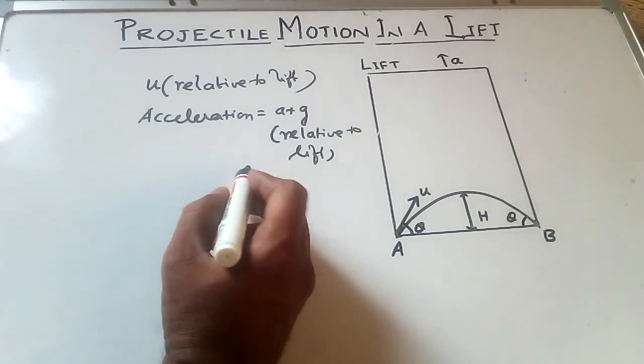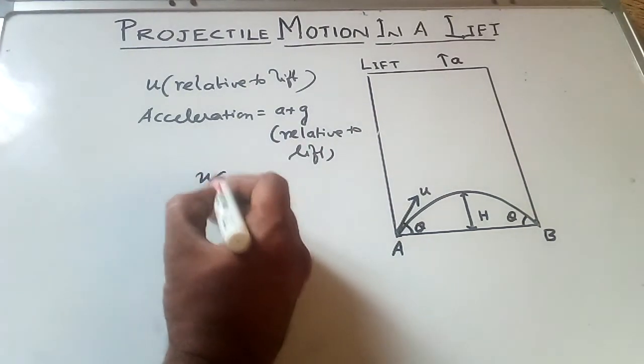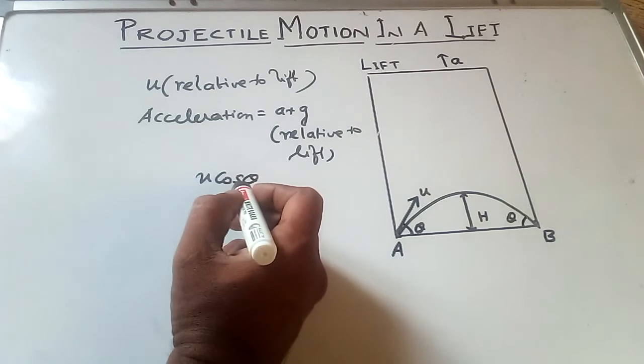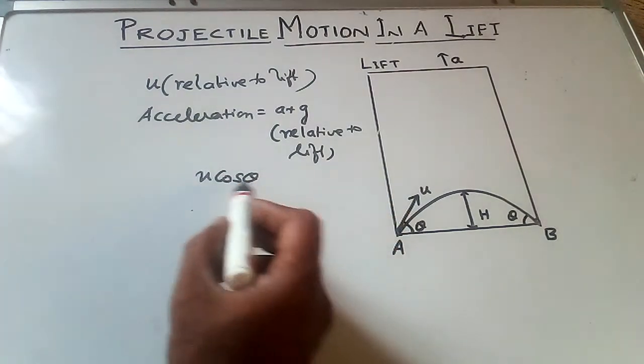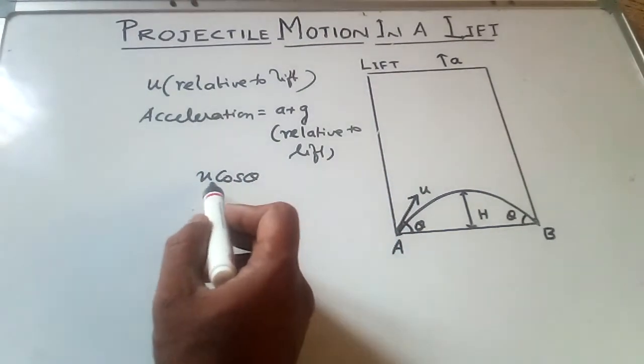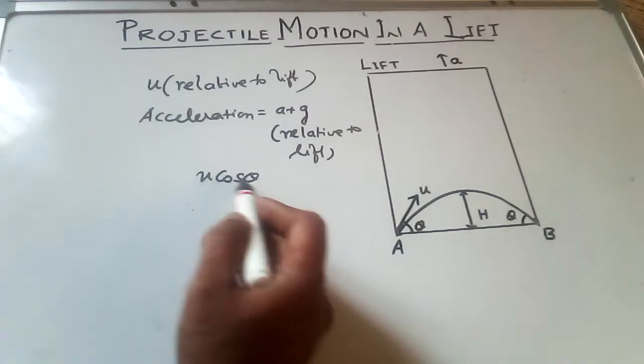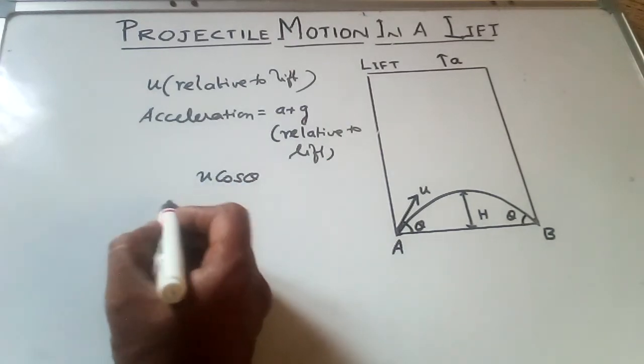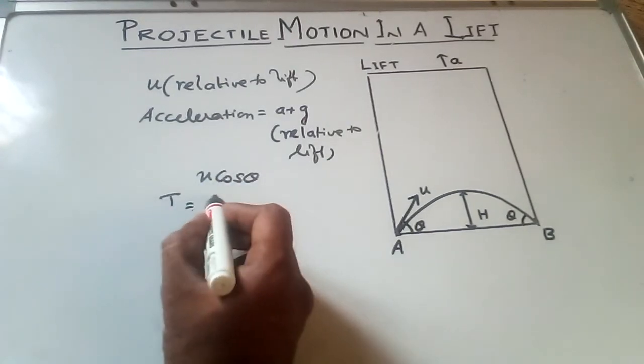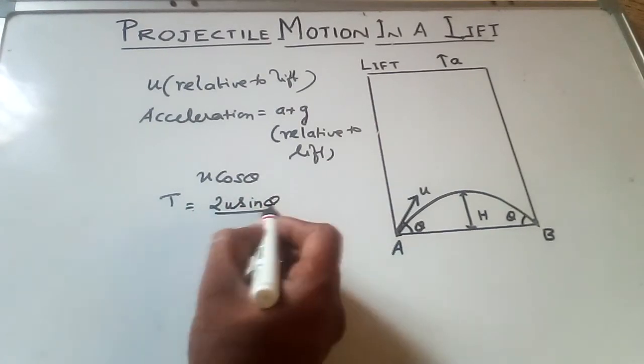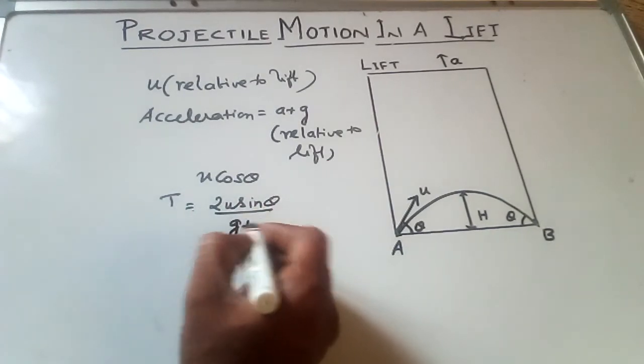Velocity at maximum height equal to U cos theta. Since there is no vertical component, only a horizontal component. So time of flight T equal to U sin theta by G plus A.